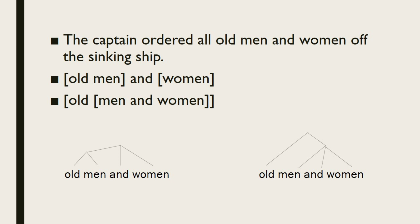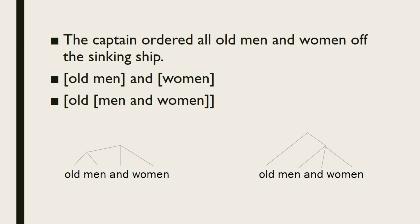Our syntactic knowledge crucially includes rules that tell us how words form groups in a sentence, or how they are hierarchically arranged with respect to one another. Consider the sentence: 'The captain ordered old men and women off the sinking ship.' The phrase 'old men and women' is ambiguous, referring either to old men and to women of any age, or to old men and old women. The ambiguity arises because the words 'old men and women' can be grouped in two ways. The rules of syntax allow both of these groupings, which is why the expression is ambiguous.